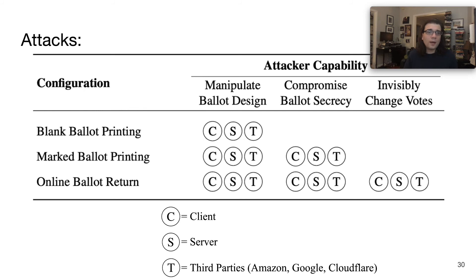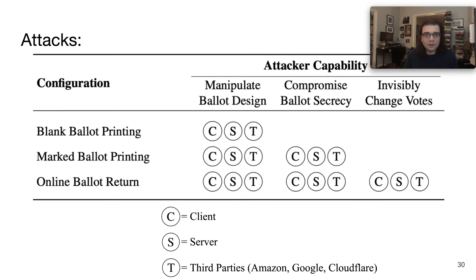For instance, with blank ballot printing, the client, the server, or third parties could very easily manipulate the ballot design, but couldn't necessarily compromise ballot secrecy or invisibly change votes, because the ballot is printed out, physically marked, and then mailed back. But with marked ballot printing — the remote accessible vote-by-mail option — the ballot design could be manipulated and the secrecy of the ballot was in fact compromised. And finally, with online ballot return, there was nothing protecting the user much at all.